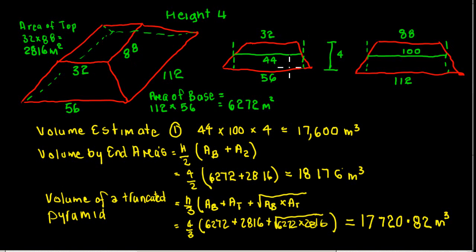Over here I have drawn some sort of an end view: 56, 32, with a height of 4 in the middle. The mean area through here or the mean between the two is 44. And then looking at from the side view, similarly 88, 112, 100, and height of 4. So the mean of 100 through there.